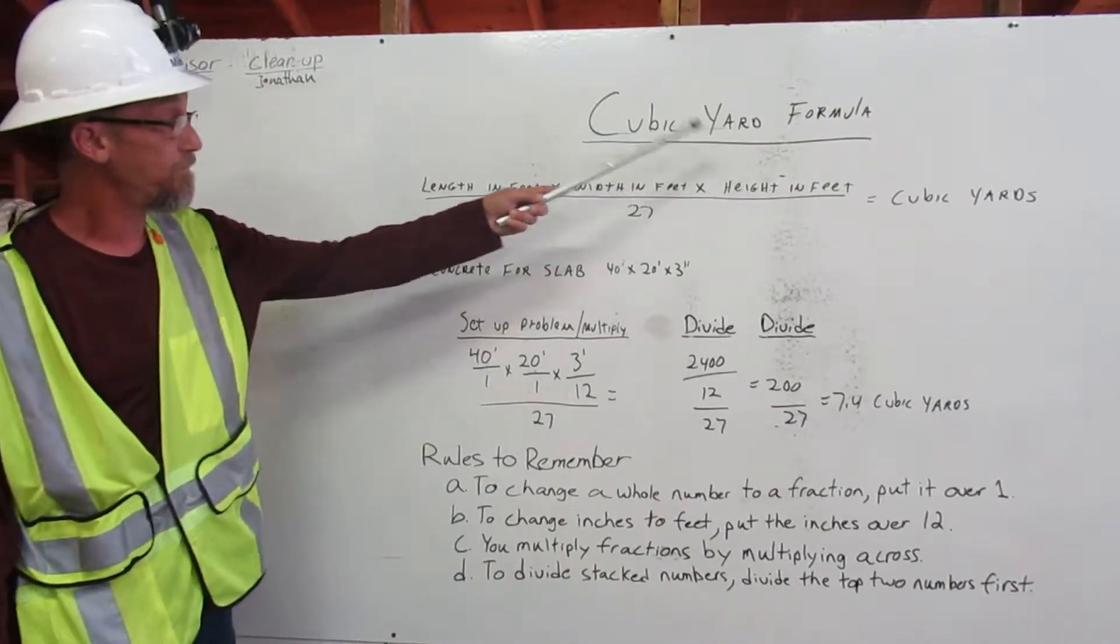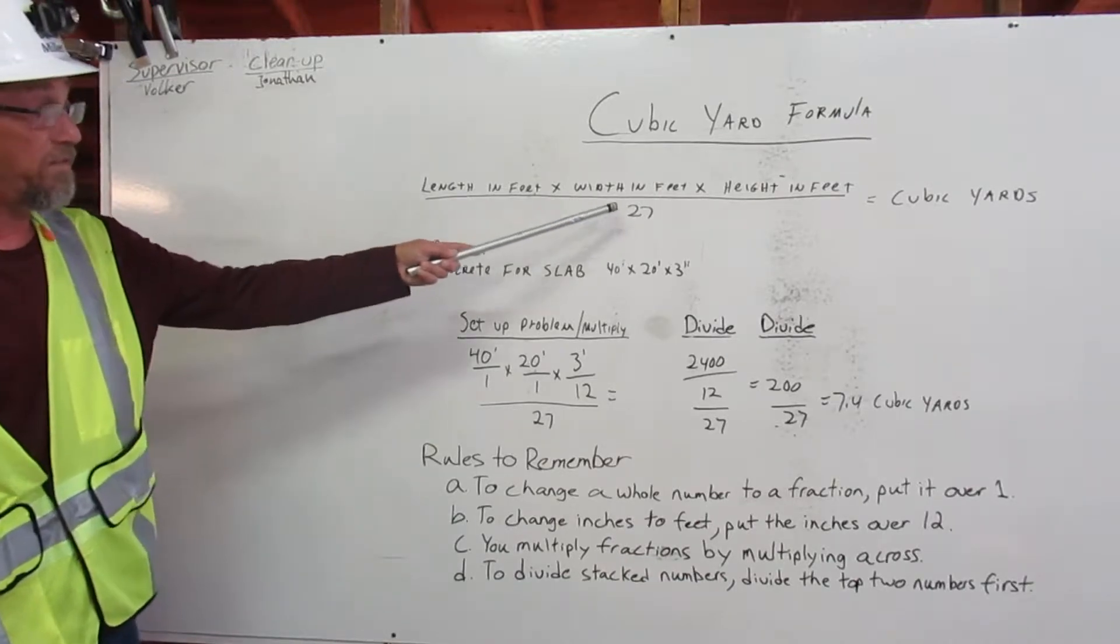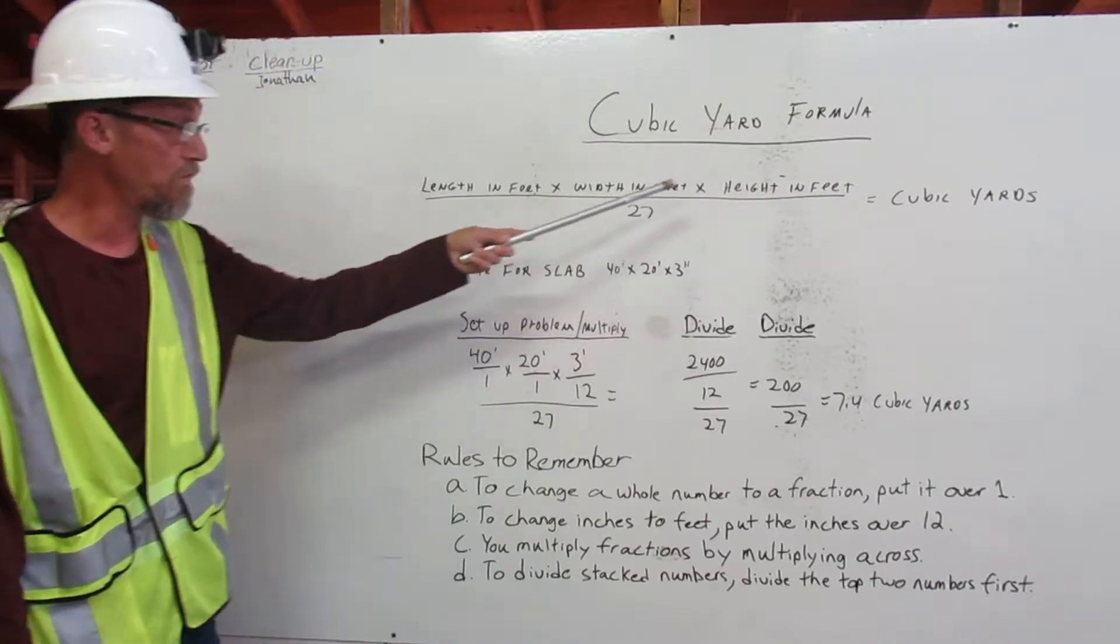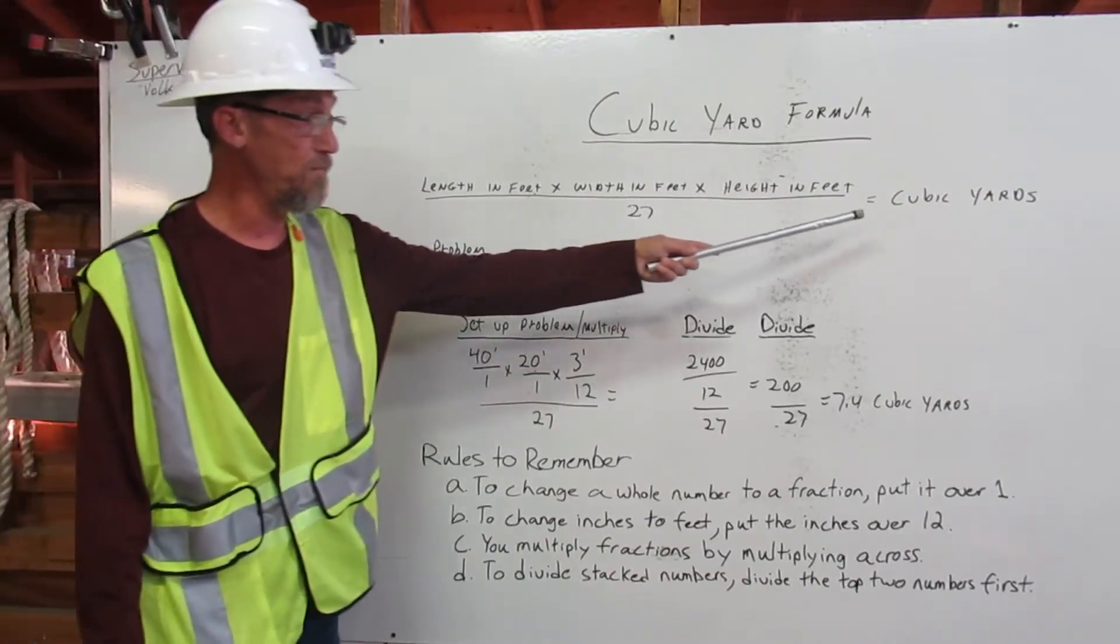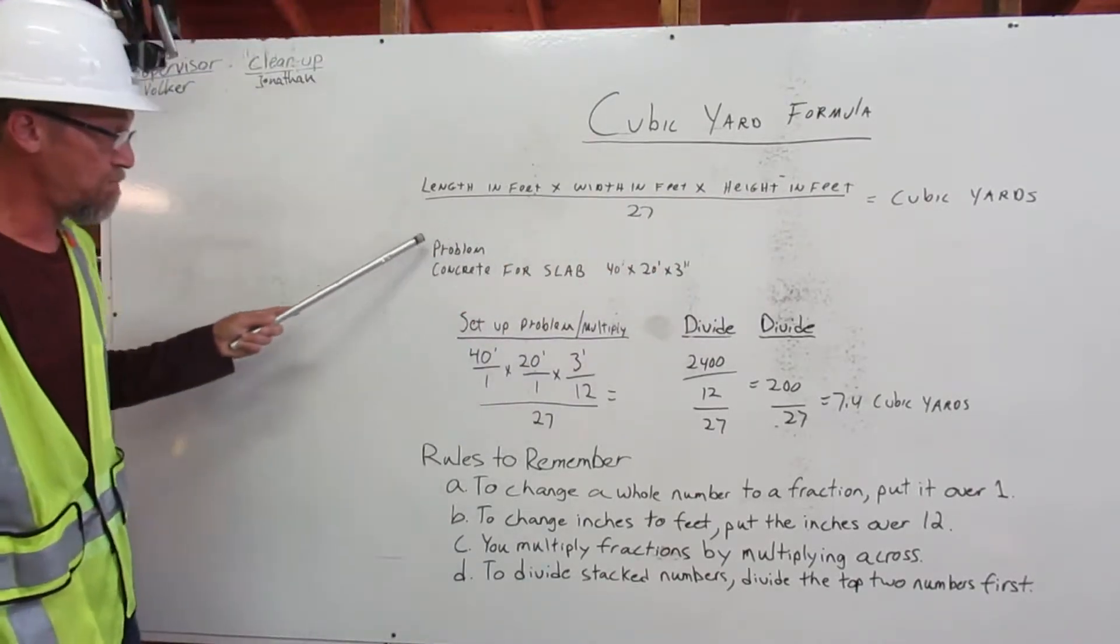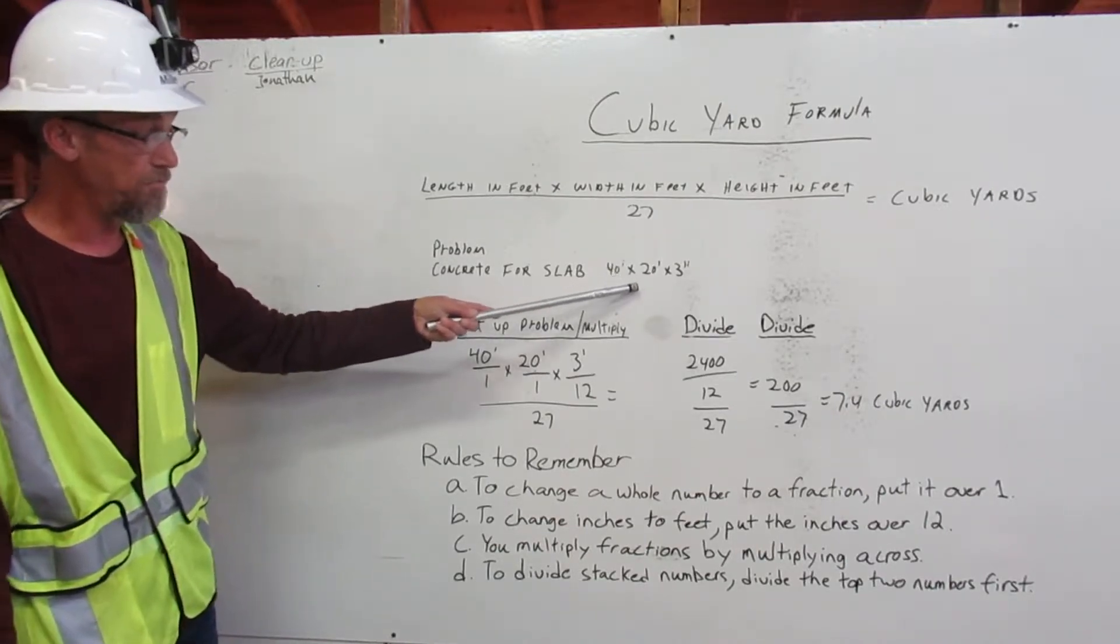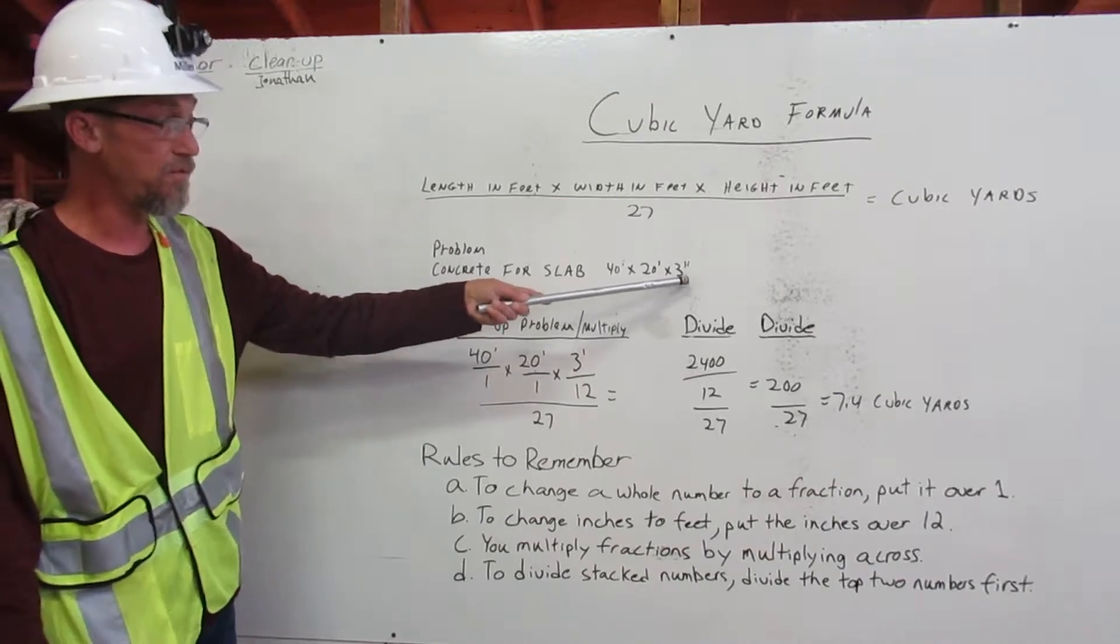Cubic yard formula: Length in feet times width in feet times height in feet over 27 gives you cubic yards. Problem: Concrete per slab, 40 feet times 20 feet times 3 inches.